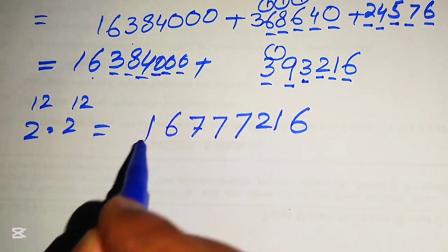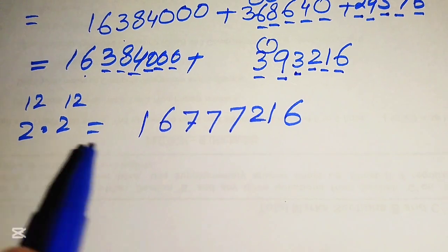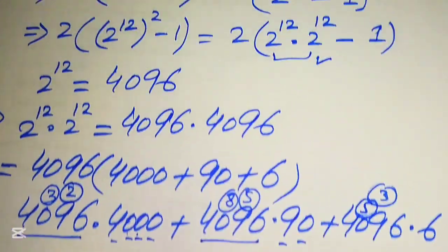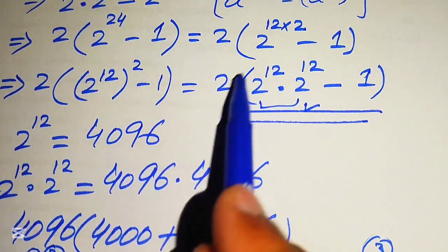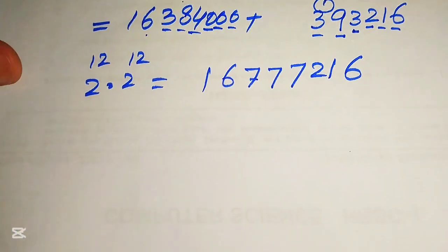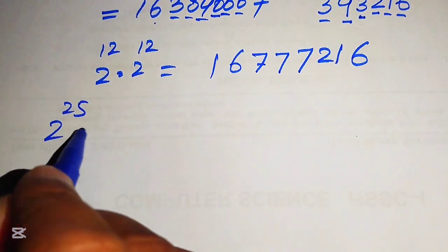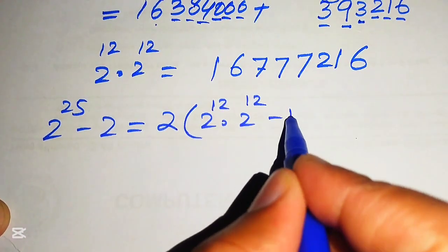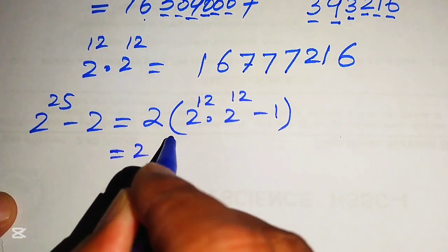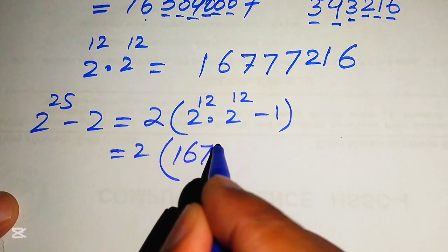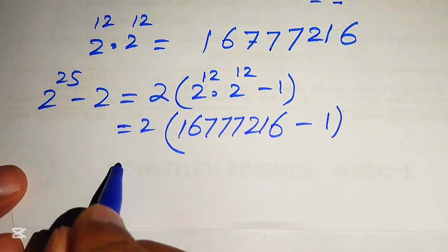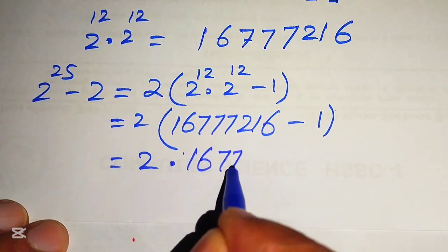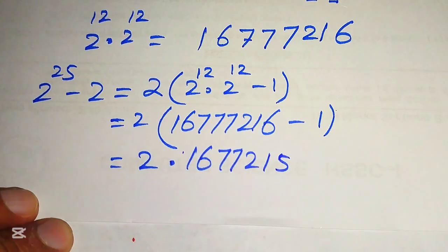After summing all partial products, we find that 2 to the power of 12 multiplied by 2 to the power of 12 equals 16,777,216. Going back to our expression, 2 to the power of 25 minus 2 equals 2 times of (2 to the power of 12 × 2 to the power of 12 minus 1), which is 2 times of (16,777,216 minus 1), giving 2 times of 16,777,215.